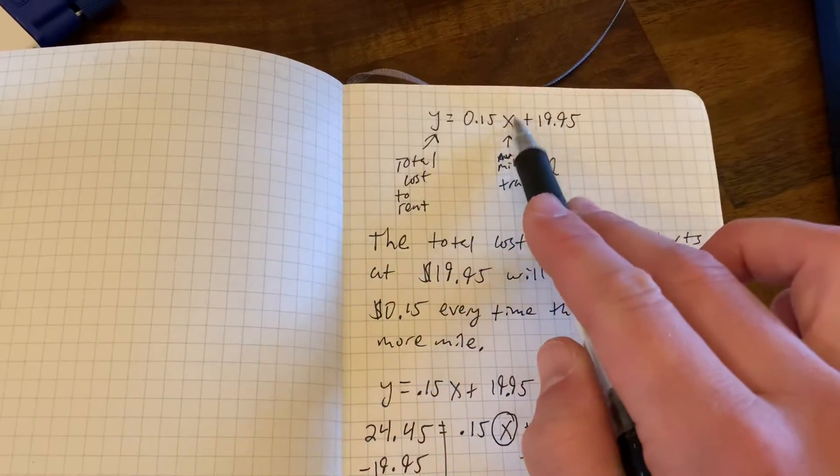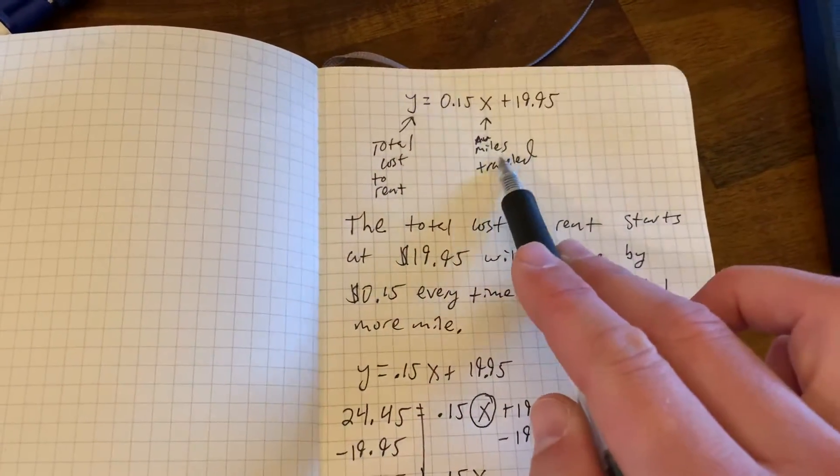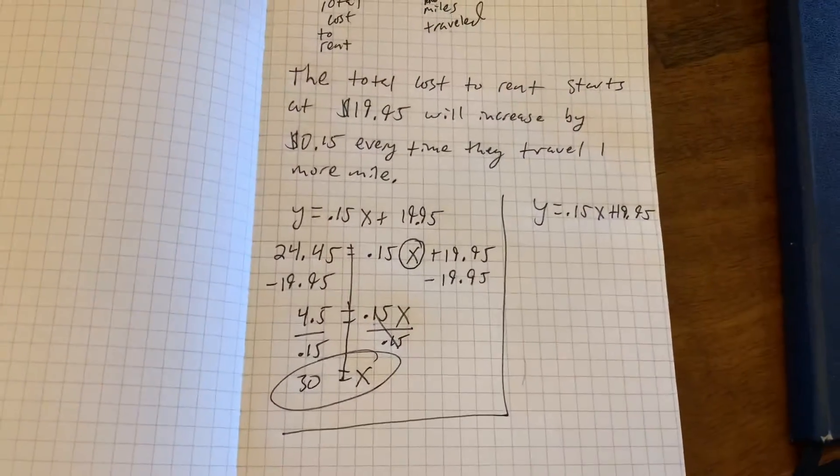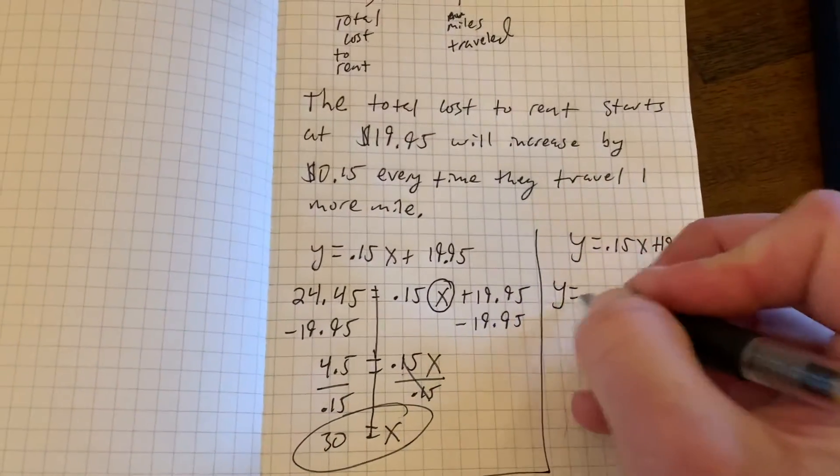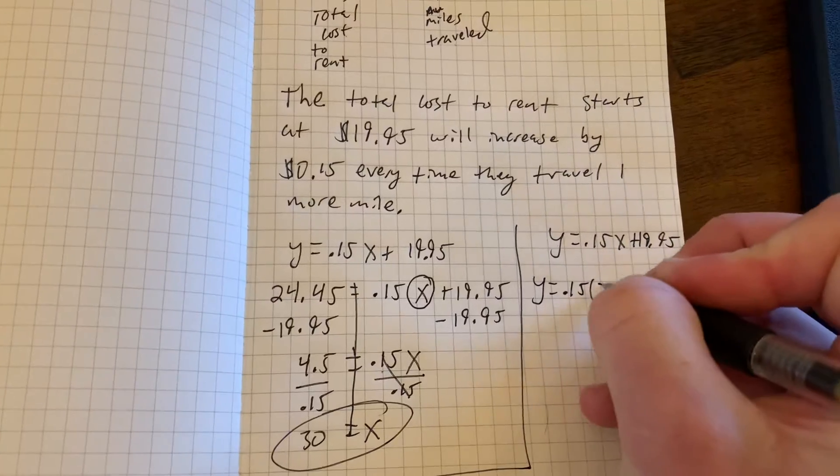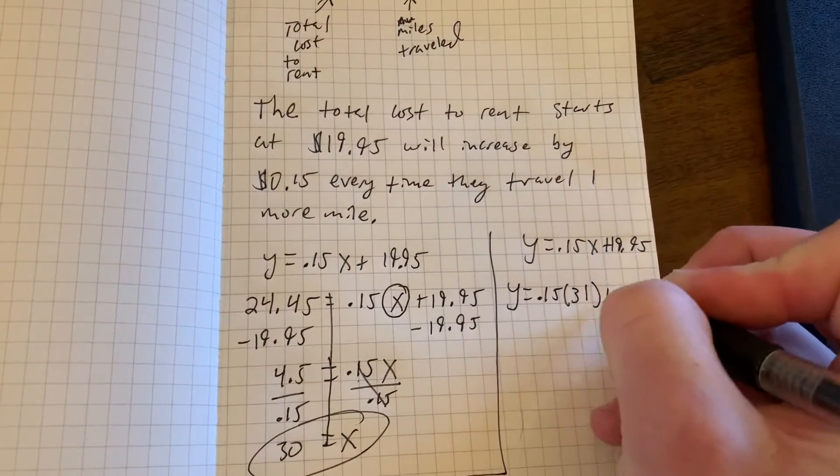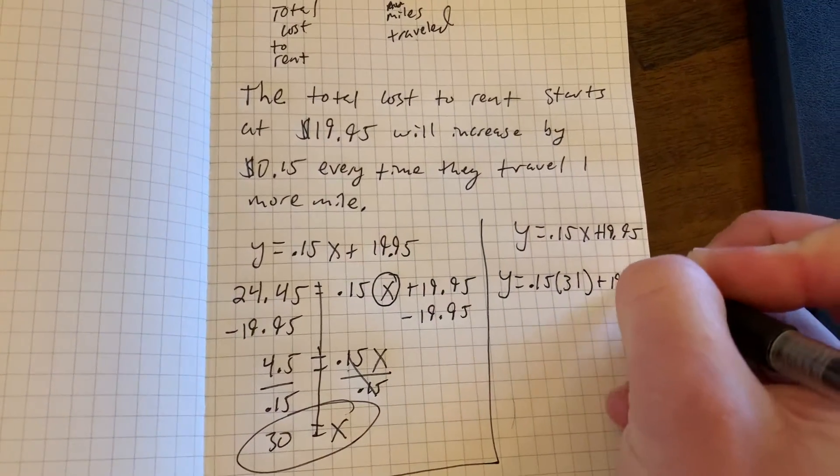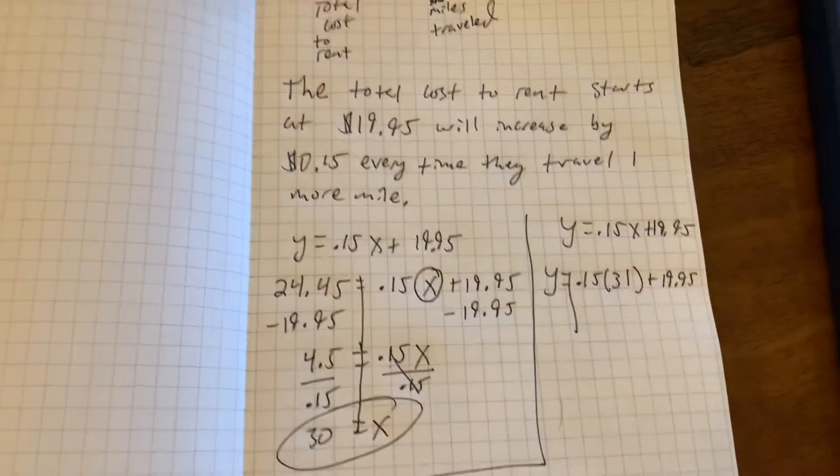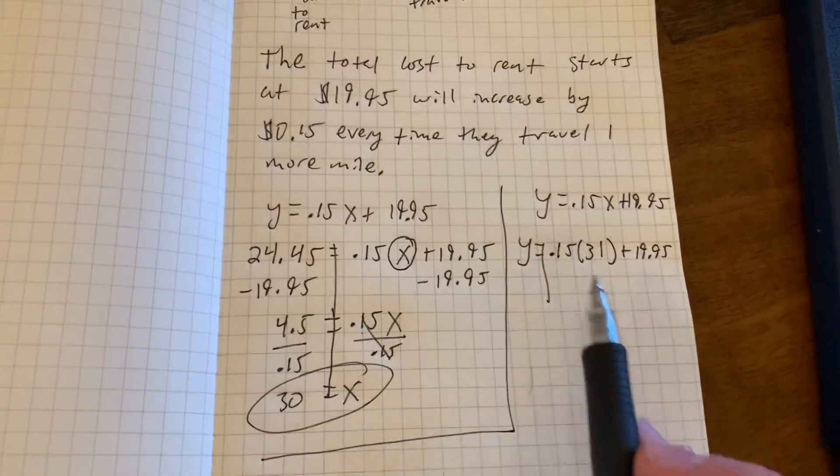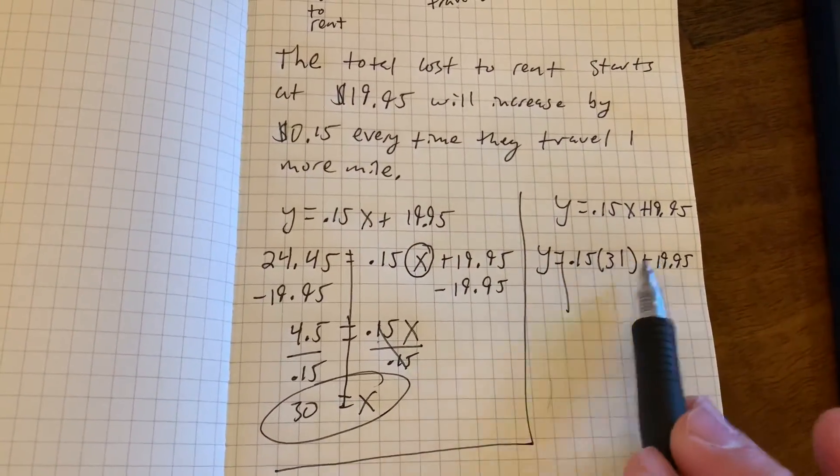So now I'm going to go and delete X down there and replace it with the 31. We are going to use nice parentheses to organize our math. And now we can see this is just a little PEMDAS problem. We just need to multiply here, then add the 19.95.